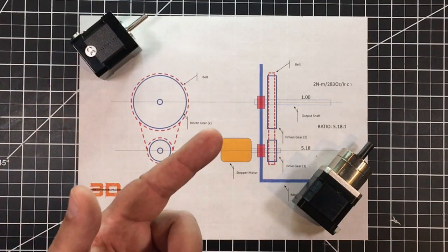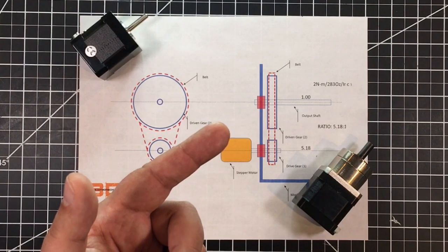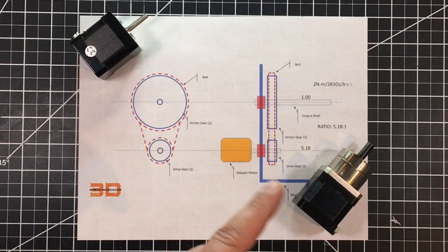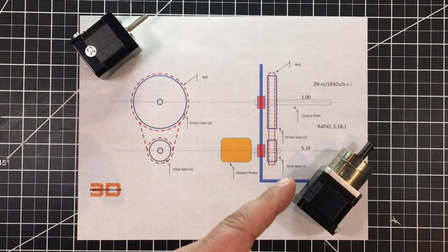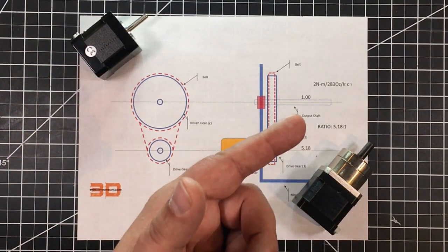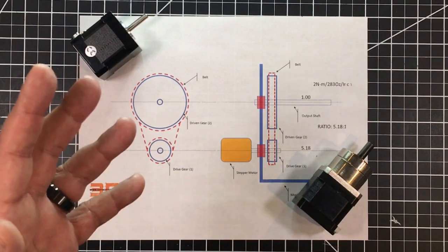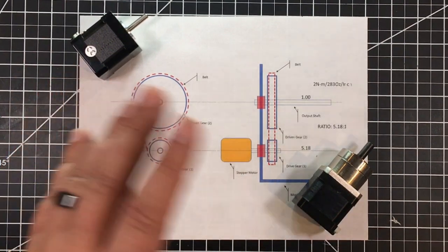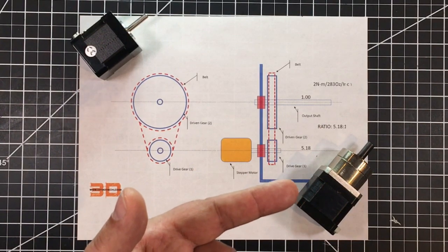For example, this guy here has two newton meters of force. That's equivalent to about, I think 283, if I have it right here on the paper, ounces per square inch. I mean, this is a lot of torque coming out of this little motor.